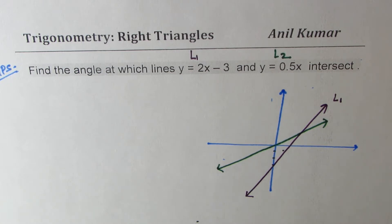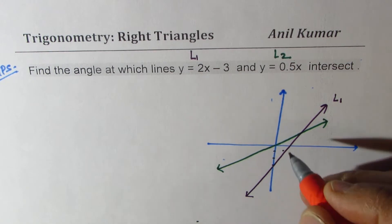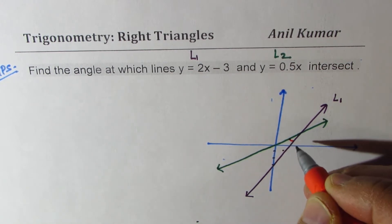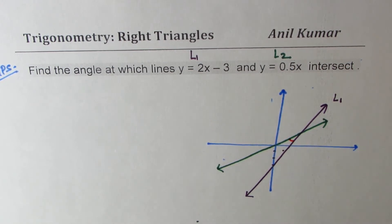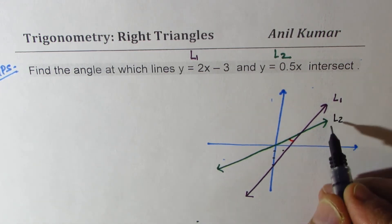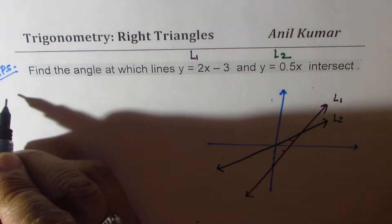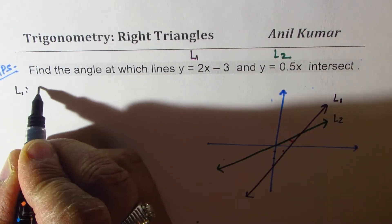What we need to find here is the angle between these two lines, which is this angle. Which is also same as the other angle. So this acute angle is what we need to find. How can we find this angle? Well, one way is for each line we can find the slope angle. So for line 1, let's find the slope angle.